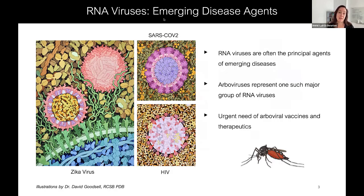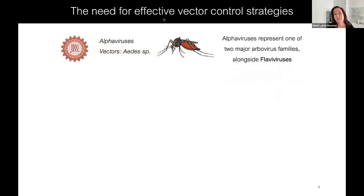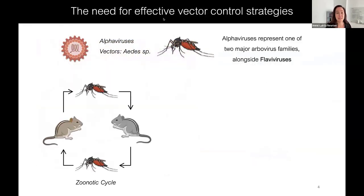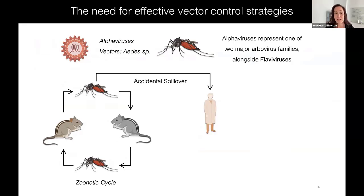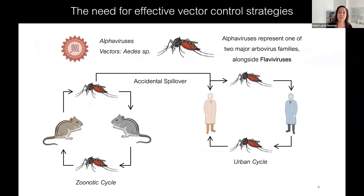Generally people focus on control of the insect vector itself. The alpha viruses we work on are one class of arboviruses, and there are two major arboviral families — flaviviruses being the others. They are found in vectors such as Aedes species. These viruses normally undergo a zoonotic cycle where they're being transmitted in wild mammalian populations to mosquitoes, but there can be accidental spillover effects into human populations and an urban cycle can develop.